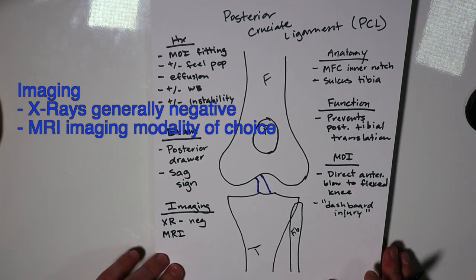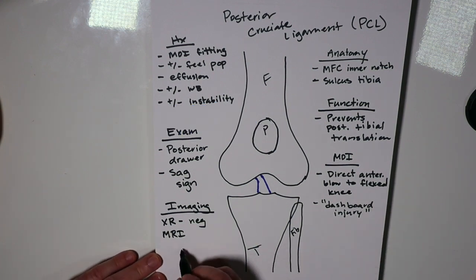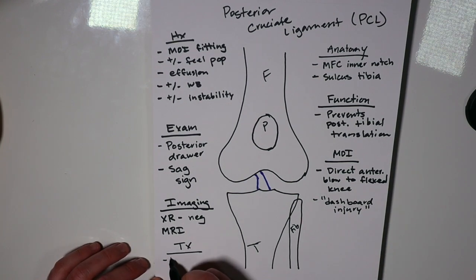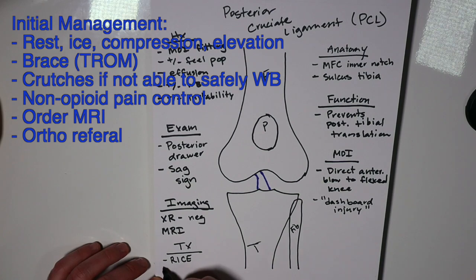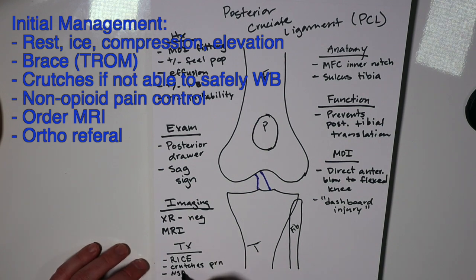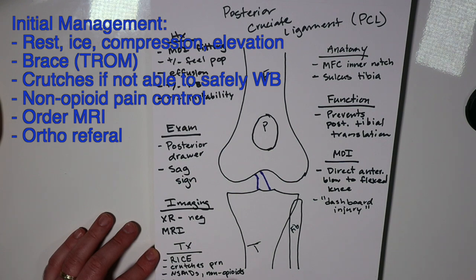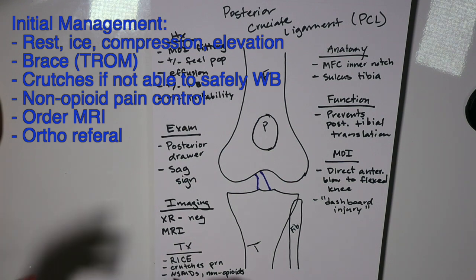There is some controversy in terms of treatment. For initial treatment — whether on an athletic field sideline, urgent care, or a primary care office — your treatment is standard conservative care to get them to ortho: RICE, crutches as needed if they're unable to weight bear, NSAIDs or non-opioids as needed. For bracing, if you can't rule out fracture, you may want to brace with an immobilizer, but if fracture is ruled out, bracing is not necessary.